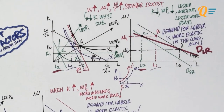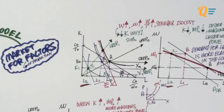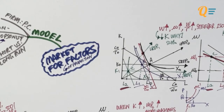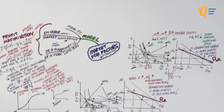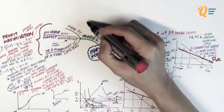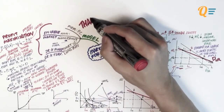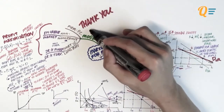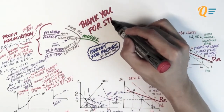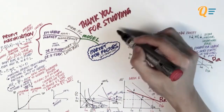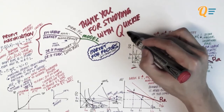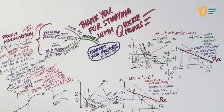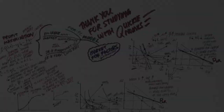So it's always the same case — the demand for labour is more elastic in the long run than in the short run. Hopefully this is a clearer explanation than what you'll find in the subject guide. I hope Quickonomics has been of much help. We'll see you in the next video when we talk about the supply of labour.